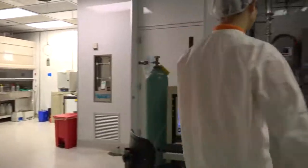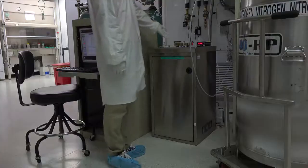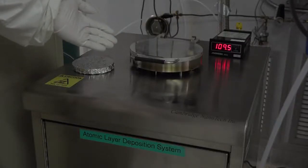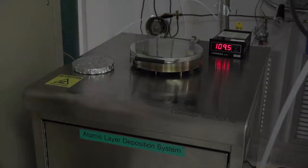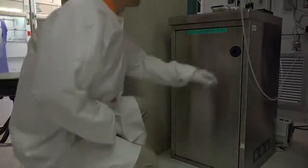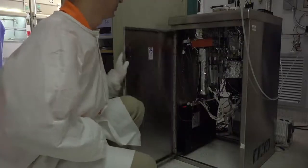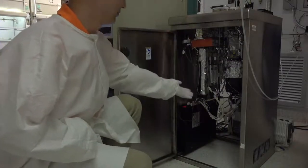Today, we will be using a Cambridge Nanotech Savannah ALD system. This round chamber on top is where we will place our substrate and the ALD process will take place. The base of this machine safely houses all of the precursor sources to deposit the thin film material as well as the vacuum pumps to pressurize the chamber and remove atmospheric contaminants.